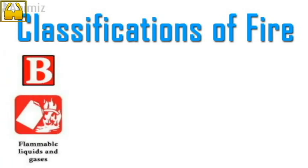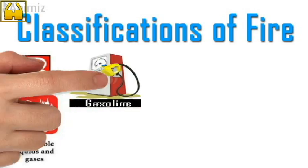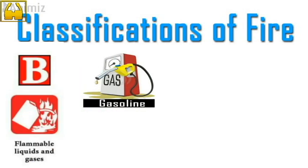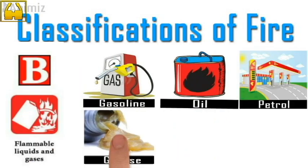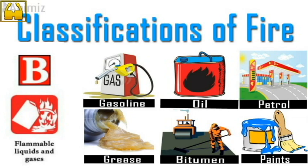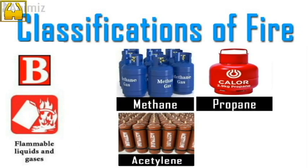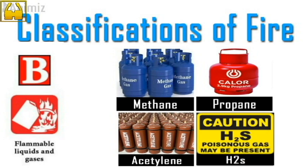Class B fires: flammable chemicals and gases come under Class B fires. Chemicals like gasoline, oil, grease, asphalt and paints. Also, gases like methane, propane, acetylene and H2S are considered as Class B fires.